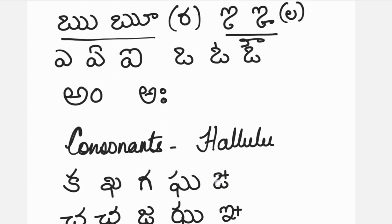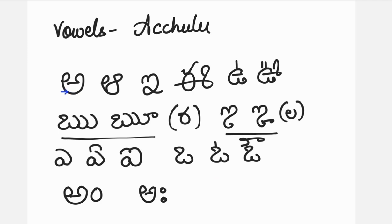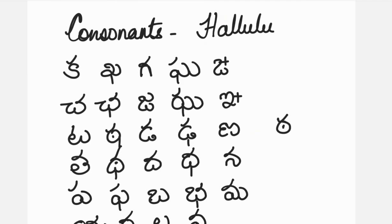Now you may observe that the achulu start with A, and all the hallulu that we have learnt are with A. So this tick on top denotes the vowel A. So K and A is Ka. Kha doesn't have a tick, but there are some consonants that have a tick on top and some that don't — yet they all carry the vowel A. Kha and A is kha; G and A is ga; Gha and A is gha.